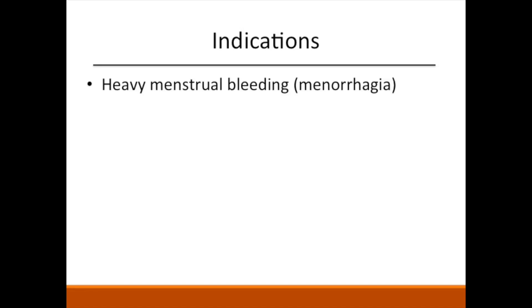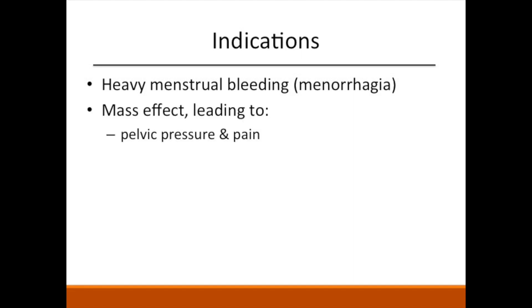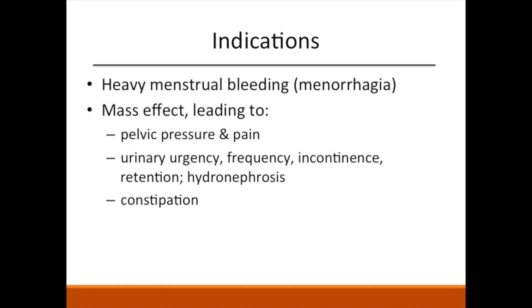While most fibroids do not cause symptoms, the indications for UFE include heavy menstrual bleeding and bulk-related symptoms. Menorrhagia is suggested to be caused by distortion of the endometrial cavity. If bleeding is excessive, severe anemia can occur, at times requiring blood transfusions and hospitalization. Mass effect-related symptoms can lead to pelvic pressure and pain, low back pain, and abdominal feeling of fullness. Fibroids commonly compress the colon and bladder, causing constipation and urinary symptoms, respectively.